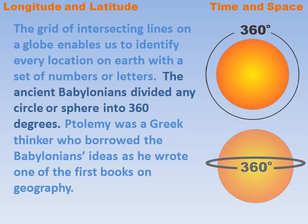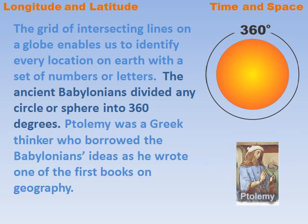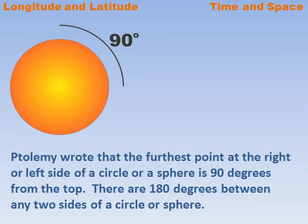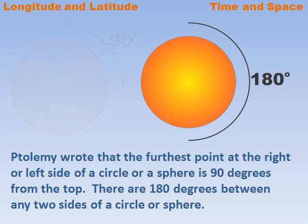The ancient Babylonians divided any circle or sphere into 360 degrees. Ptolemy was a Greek thinker who borrowed the Babylonians' ideas as he wrote one of the first books on geography. Ptolemy wrote that the furthest point at the right or left side of a circle or sphere is 90 degrees from the top.